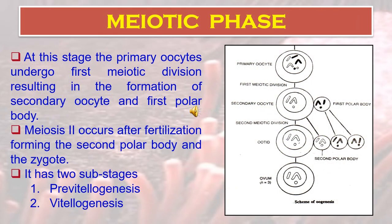In the meiotic phase, the primary oocyte undergoes the first meiotic division resulting in the formation of a secondary oocyte and the first polar body. Meiosis II occurs after fertilization, forming the second polar body and the zygote. It has two sub-stages: pre-vitalogenesis and vitalogenesis. The figure also shows this development.